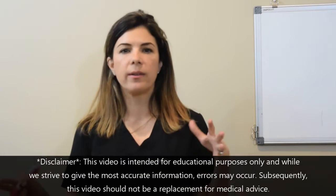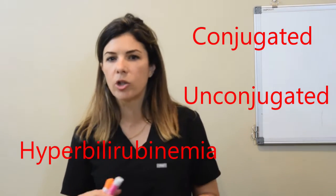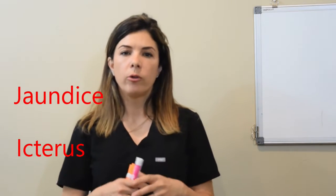I know that all these words are constantly thrown around: direct, indirect hyperbilirubinemia, conjugated, unconjugated, cholestasis, jaundice, icterus. So today we're going to go through the basic pathophysiology and the metabolism of bilirubin so you can really understand what these terms mean.